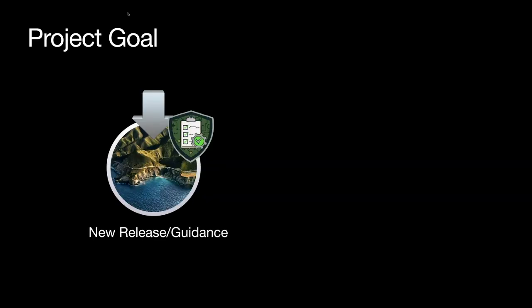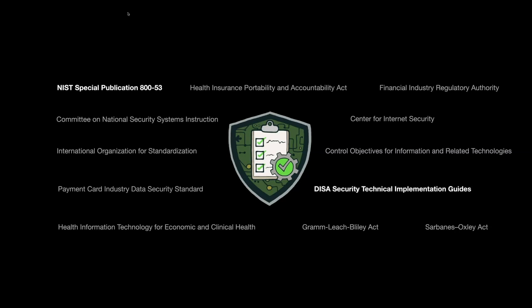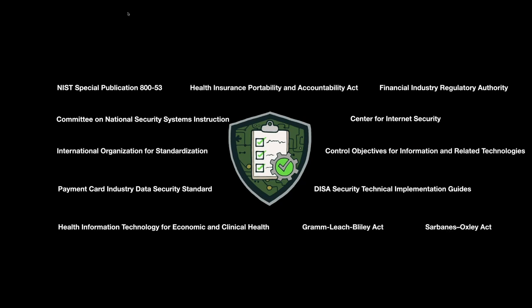Our goal is for security baselines to be produced and published shortly after the release of the operating system, so organizations can quickly and officially support new hardware. There are industries with their own checklists based on NIST 800-53 controls, such as DISA and FINRA. Our goal is not to create all of those baselines, but to create a modular solution to streamline their creation. Even if you don't work in government or a regulated industry, this can be used by anyone looking to secure machines.